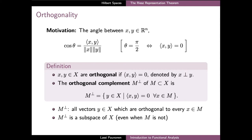In this video we'll take a look at a couple of fundamental results on Hilbert spaces. We begin by defining the concept of orthogonality in an inner product space. This definition is motivated by the property that in Euclidean spaces the angle between two vectors is equal to 90 degrees precisely if the inner product of the two vectors is equal to zero. We use this property as the basis of our definition on more general inner product spaces: two vectors x and y are orthogonal if their inner product is equal to zero.